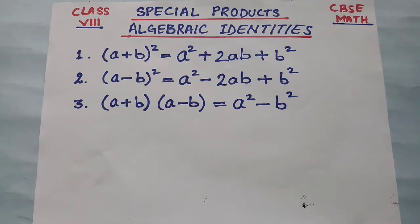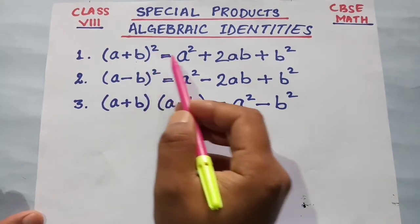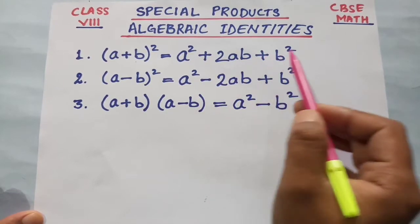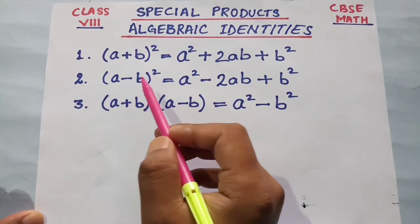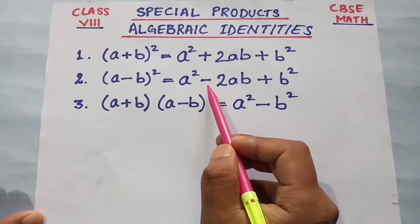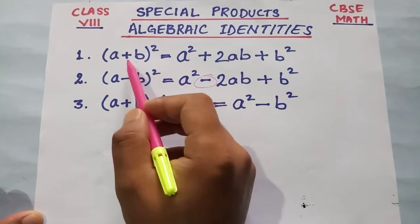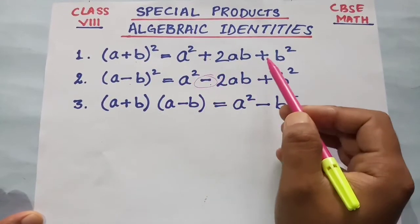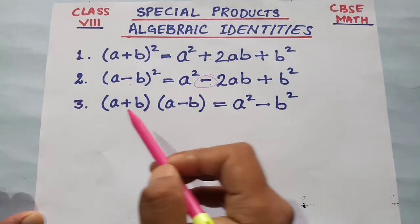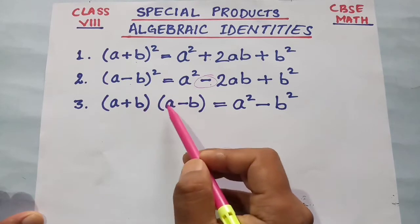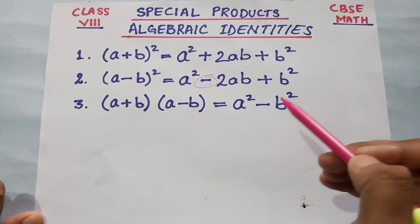We are going to do these three algebraic identities. Number one: (a + b) whole square is equal to a square plus 2ab plus b square. Number two: (a - b) whole square is equal to a square minus 2ab plus b square. Number three: (a + b)(a - b) is equal to a square minus b square.